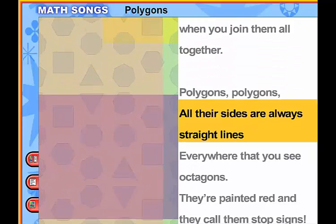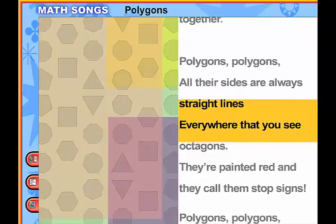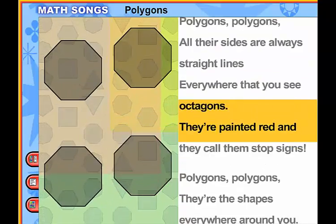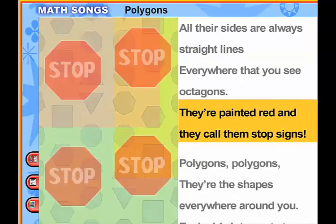Polygons, polygons. All their sides are always straight lines, everywhere that you see octagons. Polygons, they're painted red, and they call them stop signs.